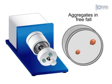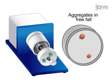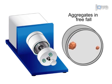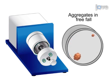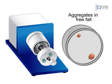Rotate the STLV on the platform to create a constant freefall environment of low-fluid shear, allowing the cells to attach and grow on the beads and form cellular aggregates.